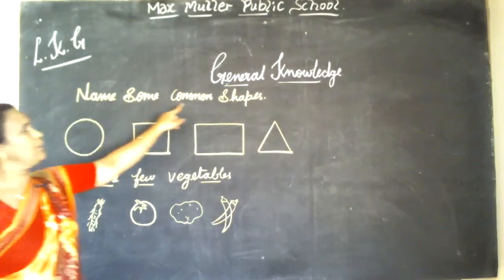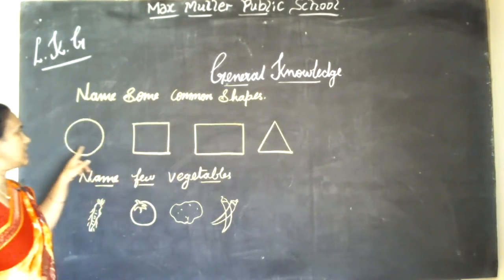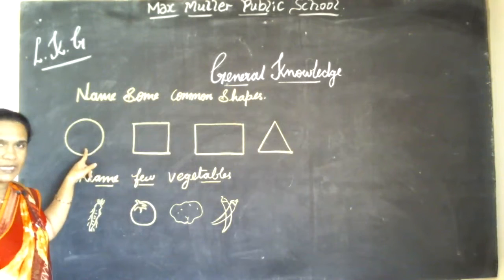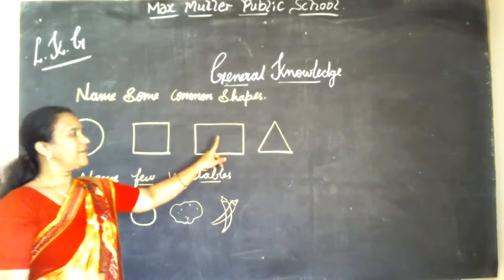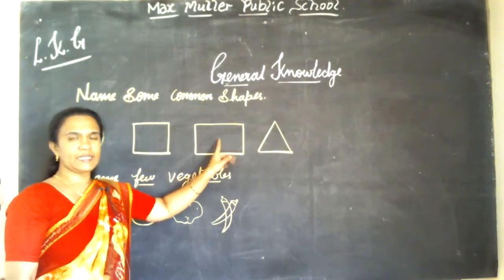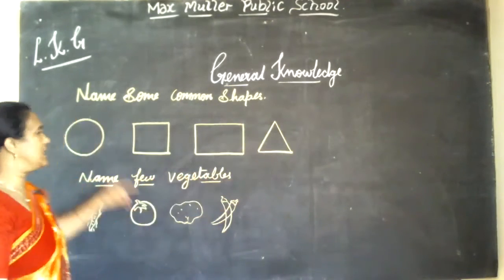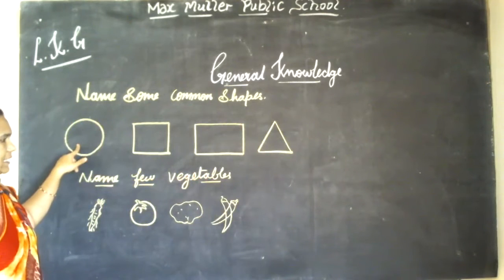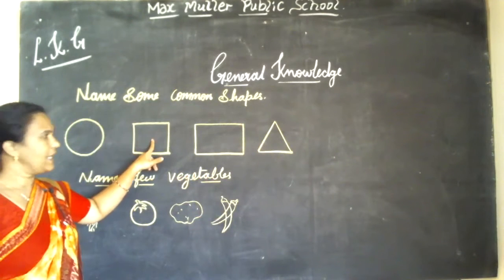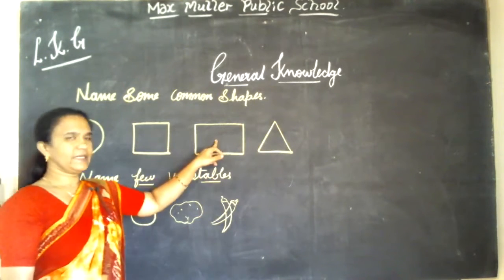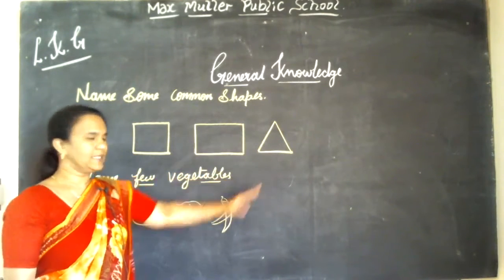Name some common shapes. Circle. Square. Rectangle. Triangle. Circle. Square. Rectangle. Triangle.